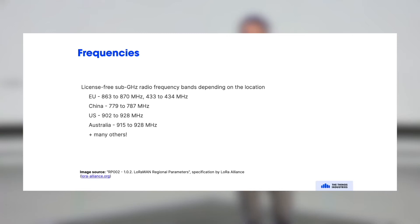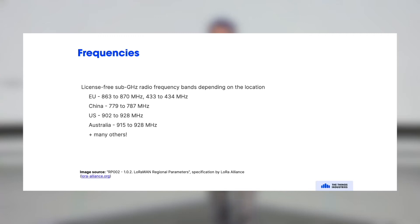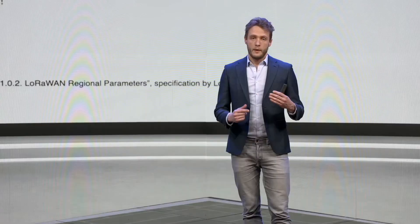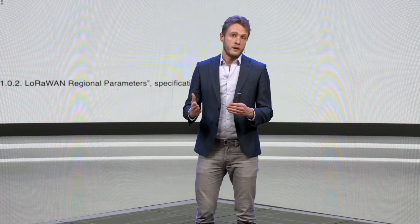In different regions you have to use different frequencies. To make that easy, LoRaWAN has a regional parameters specification for each region where LoRaWAN is supported — that's in 150 countries. You can find all the frequencies for that region, and your end device as well as the network server make sure this all works. It's all part of the regulation, so usually you don't really have to think about this.